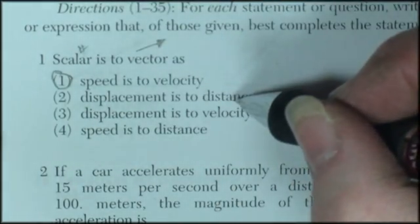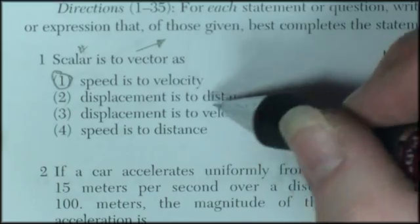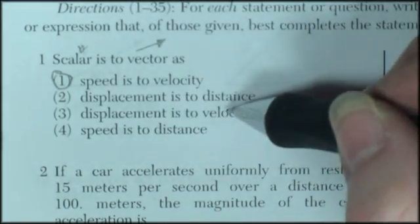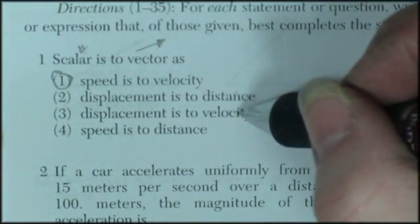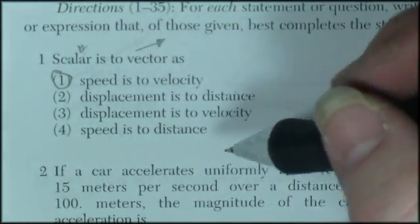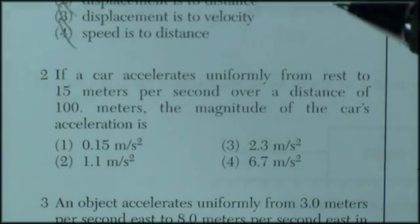Displacement to distance. The other way around would be this is the vector to scalar. Displacement to velocity indirectly related. Speed to distance also indirectly related. So all wrong answers.